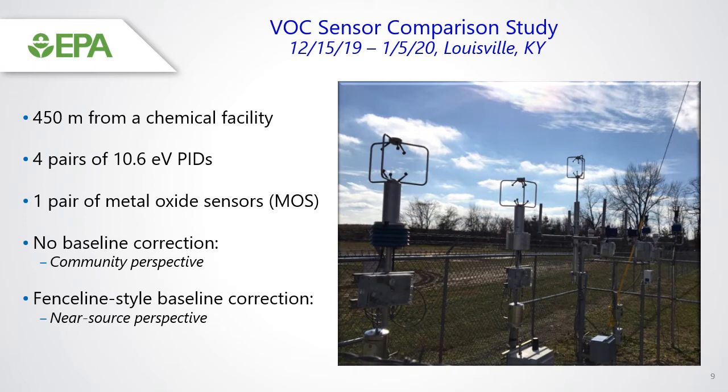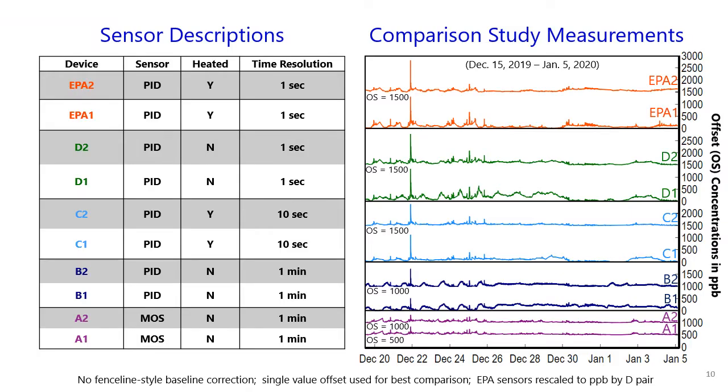This is the VOC sensor comparison study conducted at the Louisville site, running for about one month between December 2019 and January 2020. This study was conducted to further understand how this signal is seen by different types of sensors made by different manufacturers. At this site, there were four pairs of co-located PID sensors and one pair of metal oxide sensors. Data was analyzed from the community perspective, where we did not apply our baseline correction, and from the fenceline perspective, where we applied our temporal-style baseline correction.